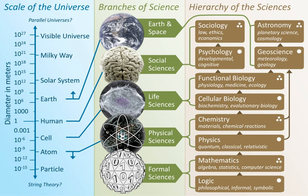Natural science is a branch of science that seeks to elucidate the rules that govern the natural world by applying an empirical and scientific method to the study of the universe. The term natural sciences is used to distinguish it from the social sciences, which apply the scientific method to study human behavior and social patterns, the humanities, which use a critical or analytical approach to the study of the human condition, and the formal sciences.